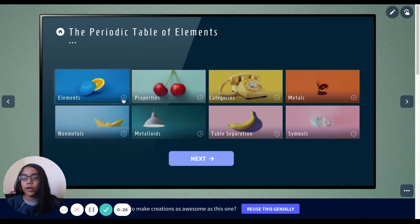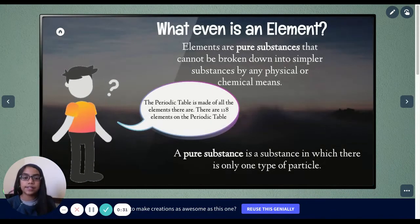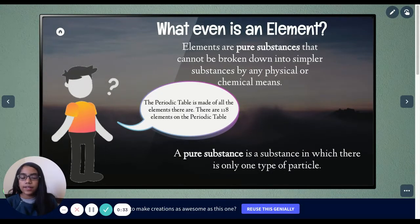First of all, we're going to look at elements. The periodic table is made of elements. So what even is an element?